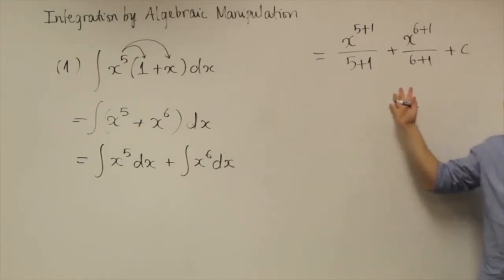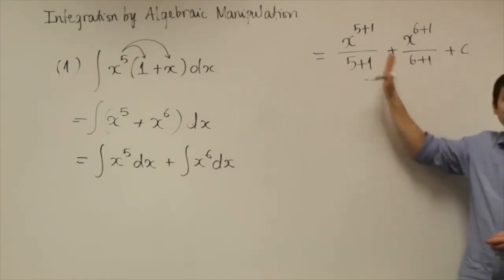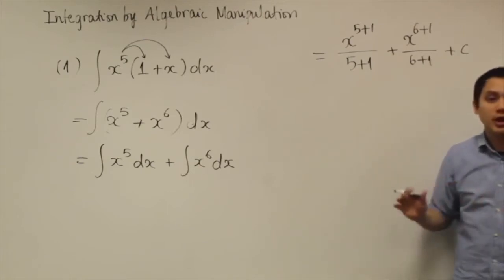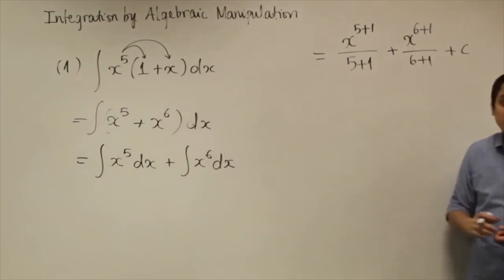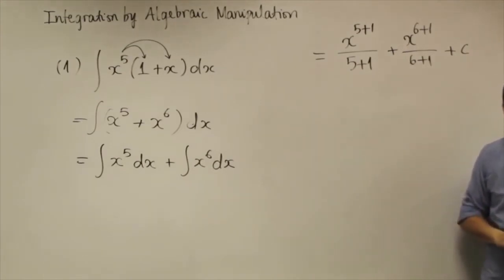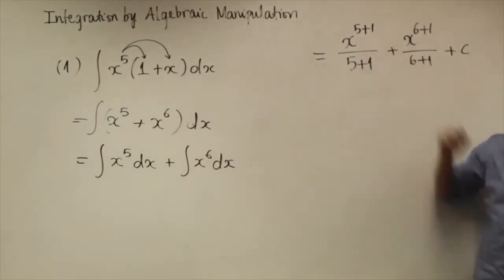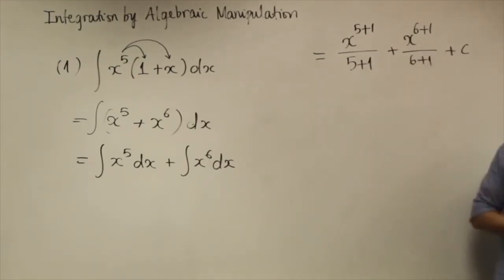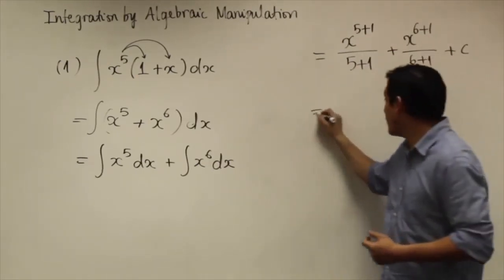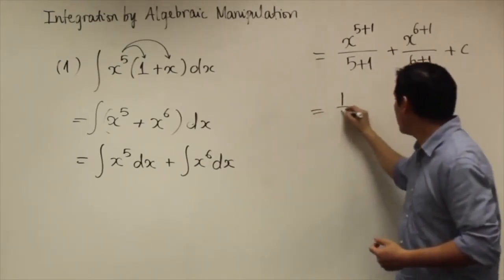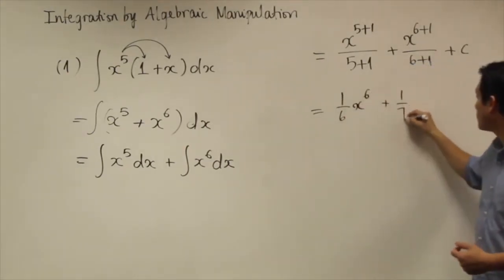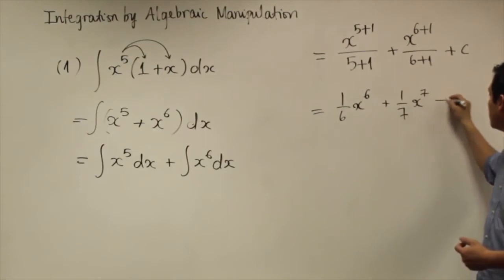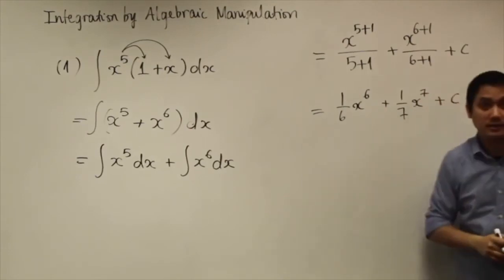Now, if this is a free response question, you can just leave it like that — that's fine. But if this is a multiple choice question, you might want to simplify a little bit. If you simplify, 5 plus 1 is 6 and 6 plus 1 is 7, so you get one-sixth times x to the sixth, plus one-seventh times x to the seventh, plus the constant C.